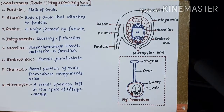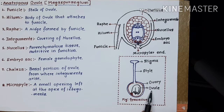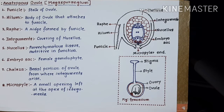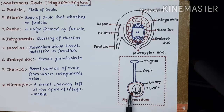Our aim is to know how the embryo sac — how the megaspore — is going to develop inside the ovule, inside the megasporangium. This process is known as megasporogenesis. That is, the process of formation of megaspores within the megasporangium, within the ovule, is called megasporogenesis. Before studying megasporogenesis, we should have knowledge about the structure of the ovule, because the ovule is the structure where megasporogenesis is happening.